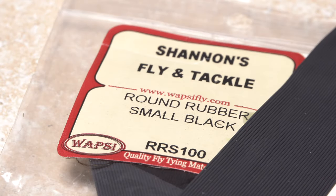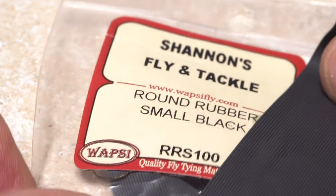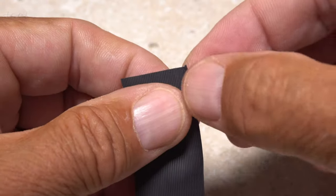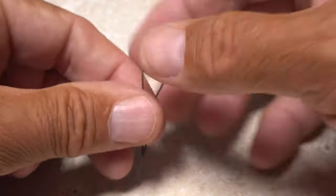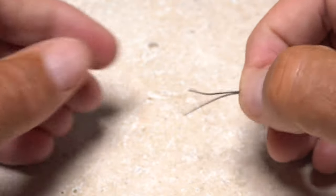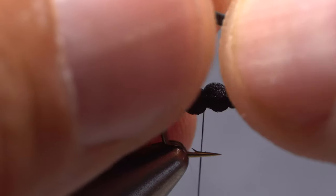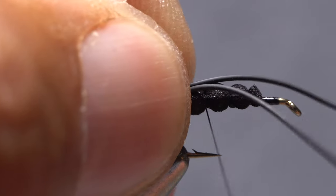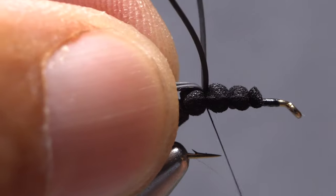Small black round rubber is used to create the legs of the fly. Strip a single three inch long length from the rest. Fold that length in half and get hold of it by its midpoint. Place that midpoint on top of the fly at the location of your tying thread and take a couple of wraps to secure it.